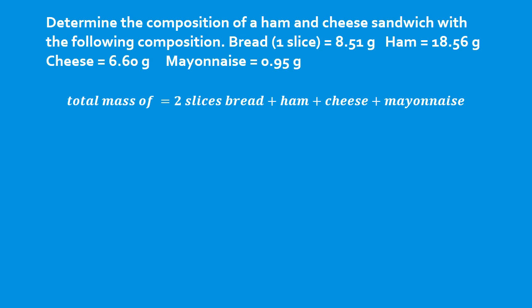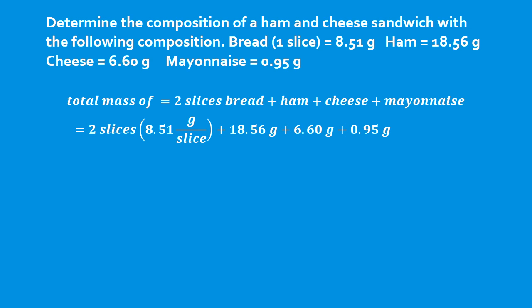We have two slices of bread, the ham, the cheese, and the mayonnaise. Each slice of bread is 8.51 grams multiplied by two slices, plus the mass of ham, cheese, and mayonnaise — that gives us 43.13 grams total. To find the percent of the bread, we take the mass of the bread divided by the total multiplied by 100: part divided by whole times 100.